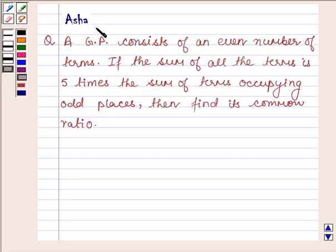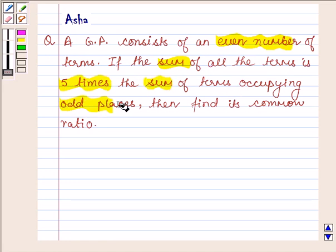Hi and welcome to the session. I am Asha and I am going to help you with the following question which says: A GP consists of an even number of terms. If the sum of all the terms is 5 times the sum of terms occupying odd places, then find its common ratio.